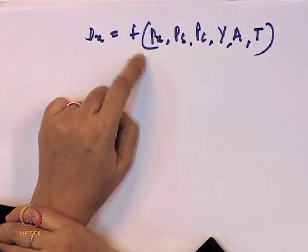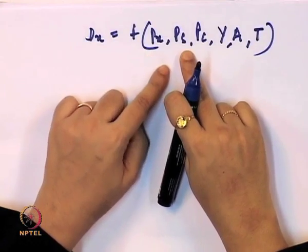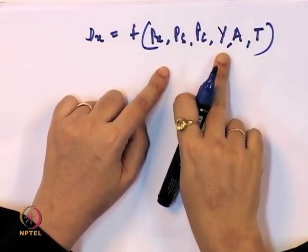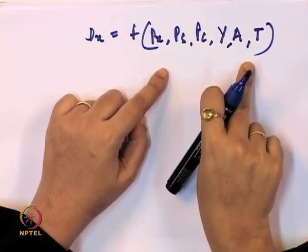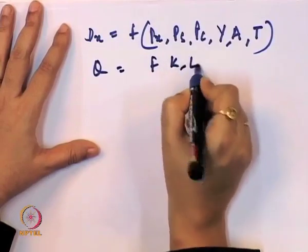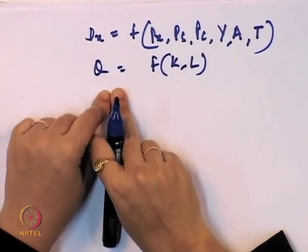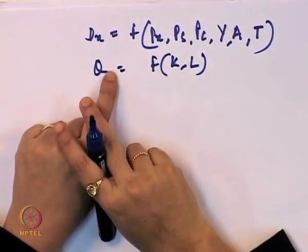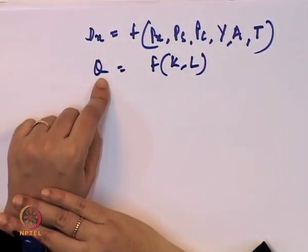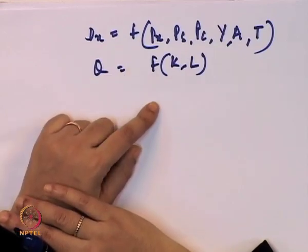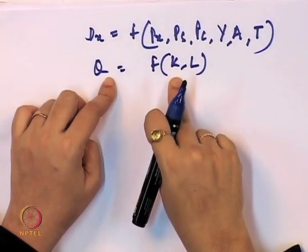Similarly, other functions used in economics have dependent variables dependent on many independent variables, not just one. Another example is the production function — in the long run, output Q is a function of both capital (K) and labor (L), not just one of them. We can also take a cost function, which is a function of capital, the rent paid for capital, and wages or salaries paid to labor.